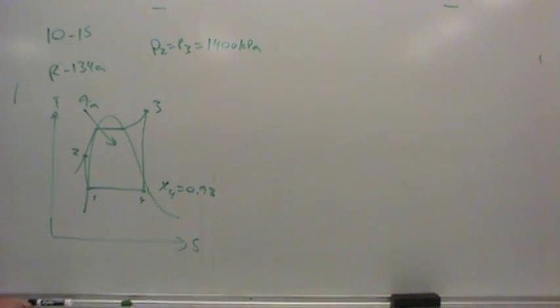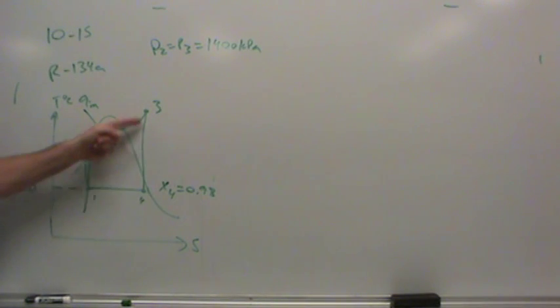They told us something else. They told us the condenser temperature, which is 10 degrees Celsius. So state one and state four are both at 10 degrees Celsius. How do we know they're both at 10 degrees Celsius? Horizontal line, right? That's the ideal. In the real system, there'd actually be a little bit of pressure loss through the condenser. But for our purposes, the pressure loss through the condenser is much smaller than the pressure drop across the turbine.